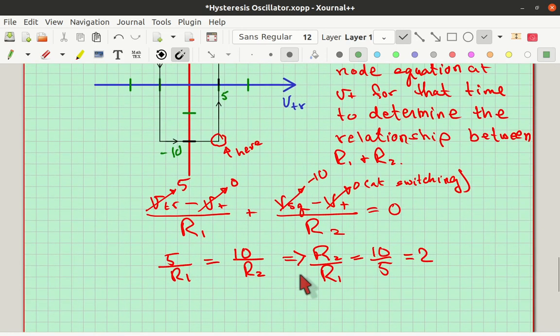So I said it switches when v plus is 0. So, I've got 5 for v triangle minus 0 plus v square, which was minus 10 minus v plus, which was 0. And each of these guys is divided by the resistors because we wrote the node equation there. And then you can just do algebra on that, and you'll find out that the ratio between r2 and r1 must be 2. So, that's how you get that. You can pick r1 and solve for r2 or however you like to do that. It works just as long as the ratio is 2.